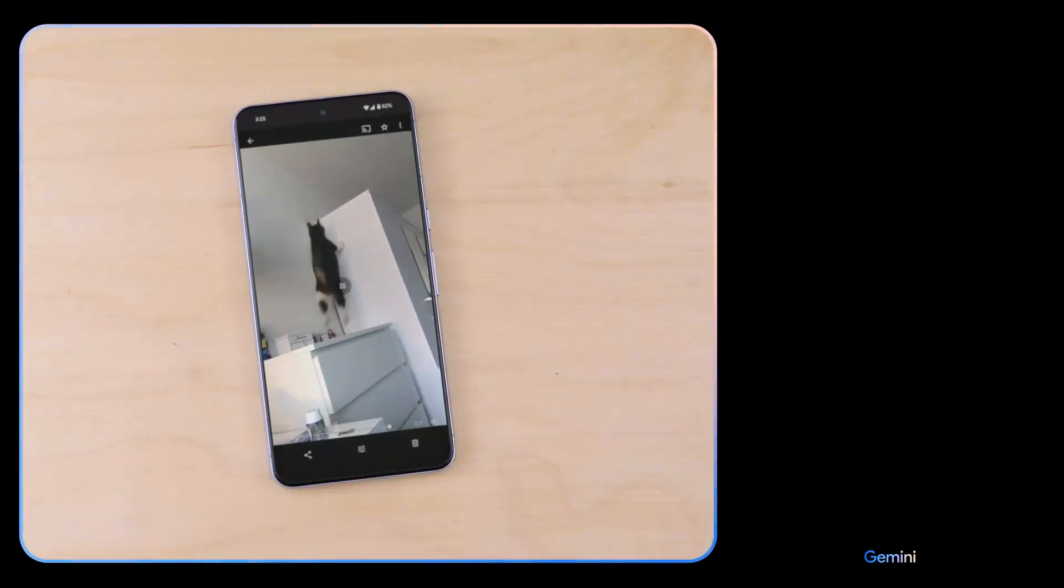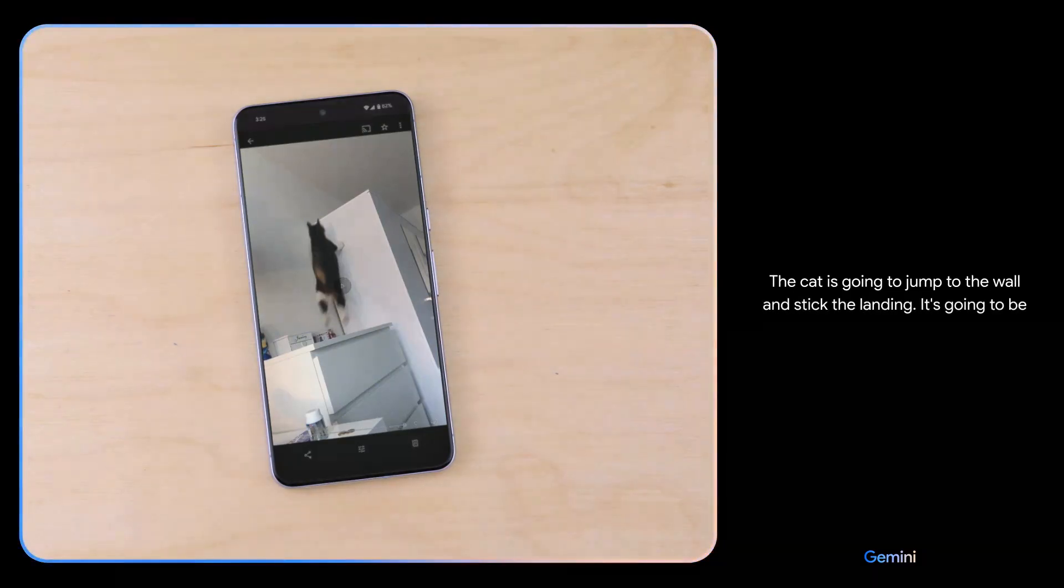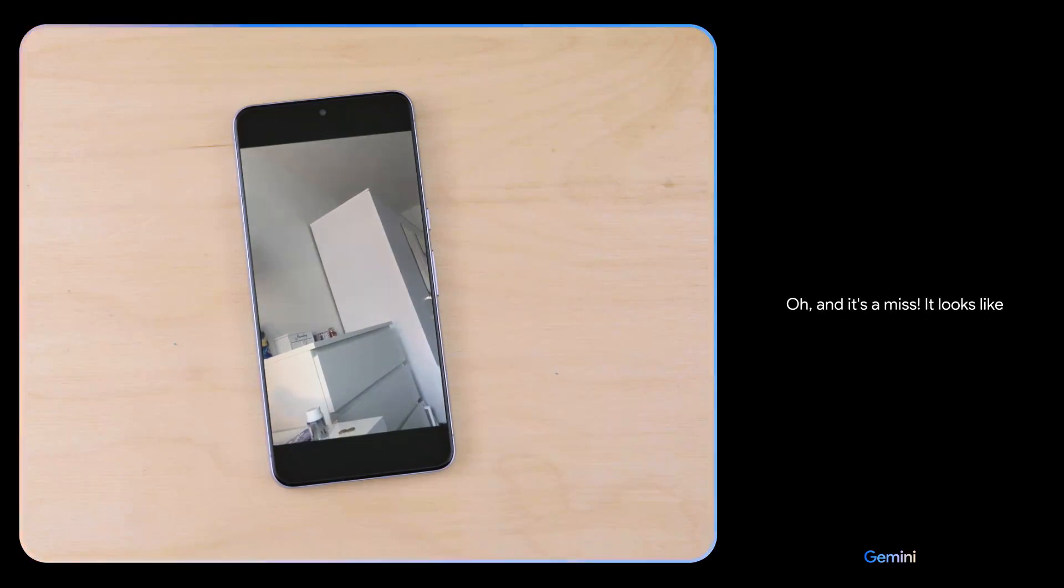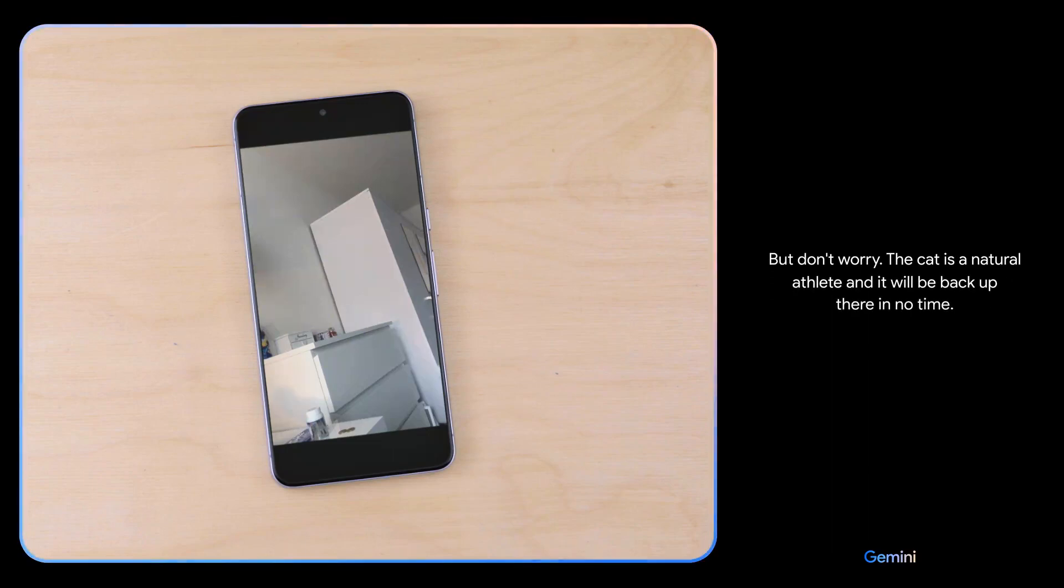What do you think might happen next? The cat is going to jump to the wall and stick the landing. It's going to be a perfect 10. Oh, and it's a miss. It looks like it was just a little too far away. But don't worry. The cat is a natural athlete and it will be back up there in no time.